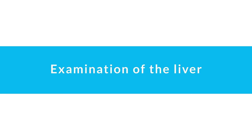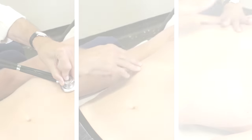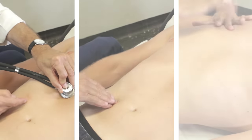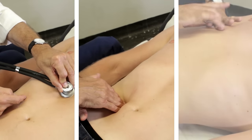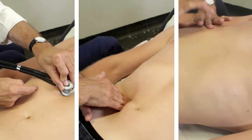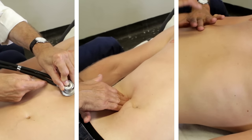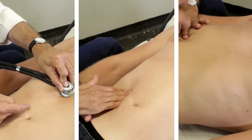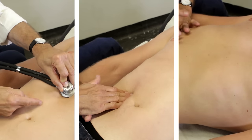Examination of the liver. Clinical examination of the abdomen should always include percussion, palpation, and optionally auscultation of the liver.